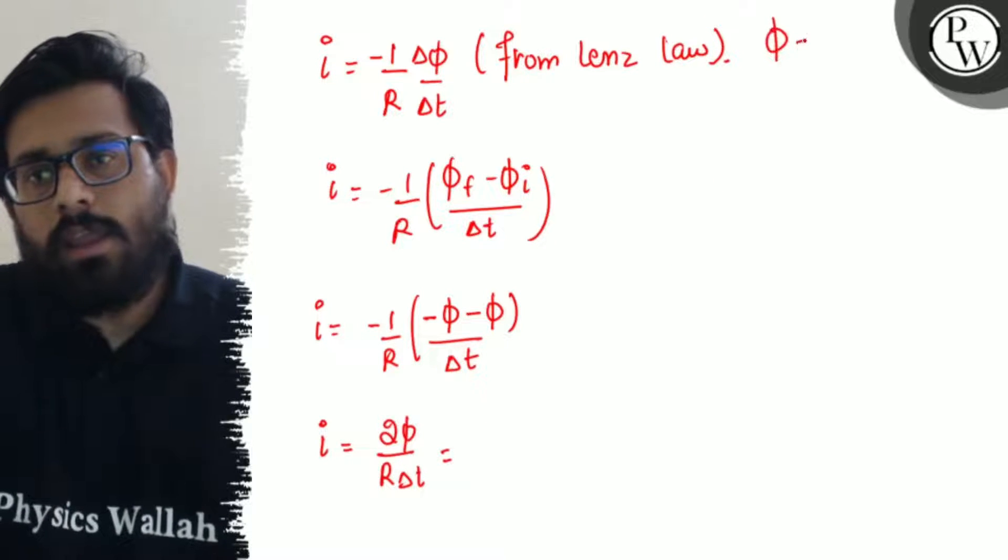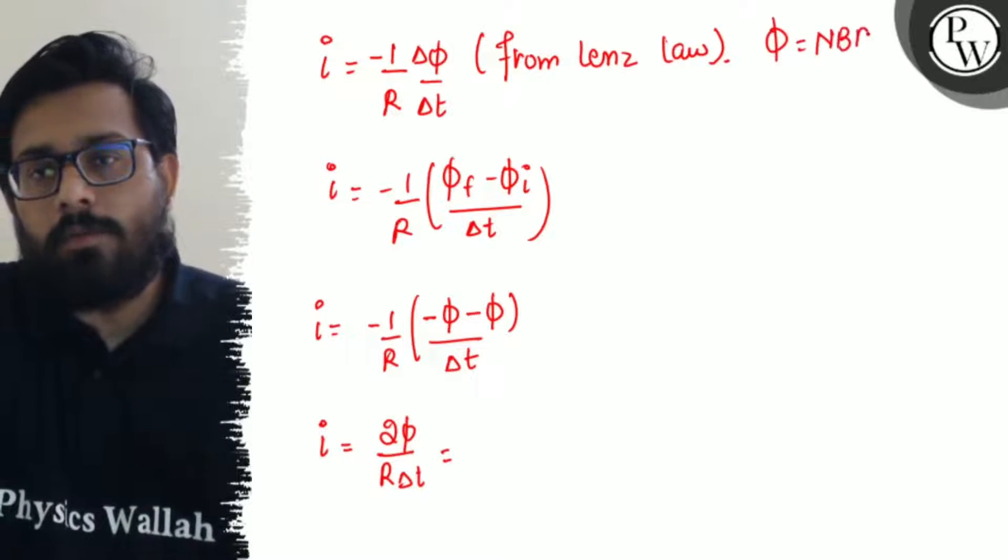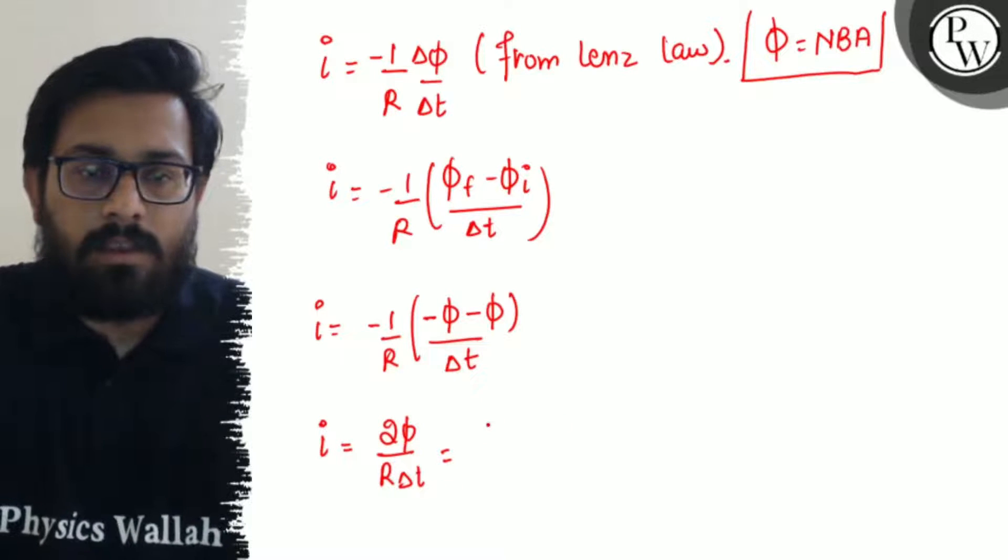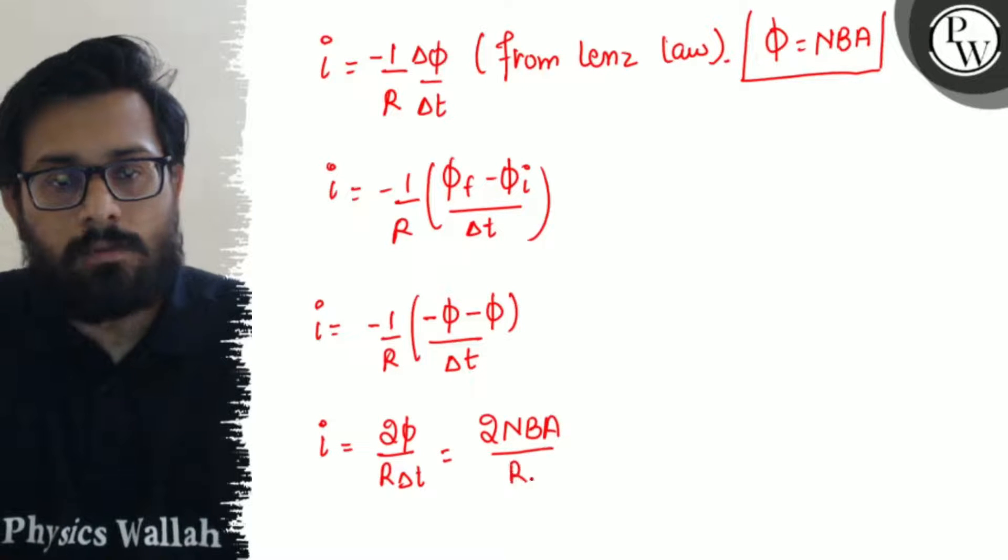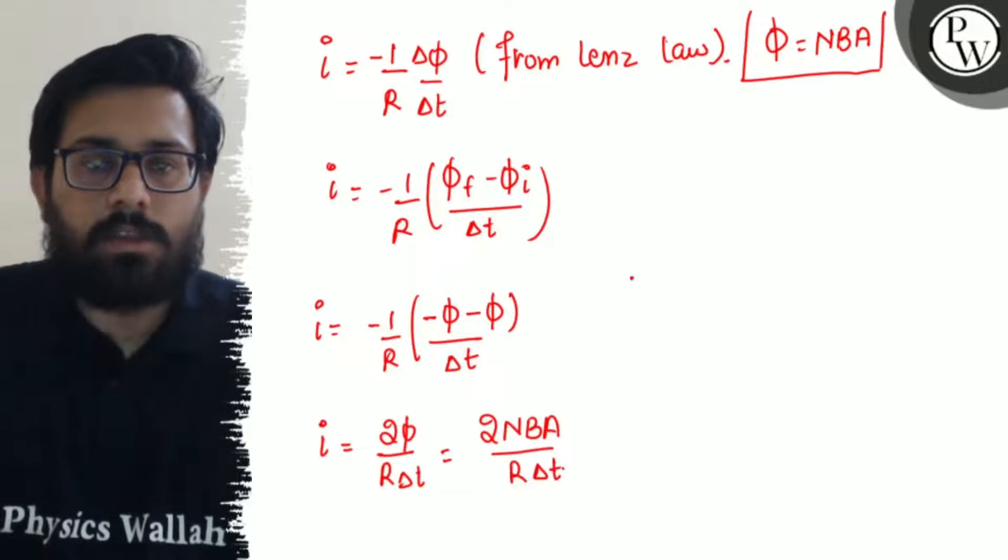φ is actually NBA: number of turns × magnetic field × area. So 2NBA/(R×Δt) is the value of induced current.